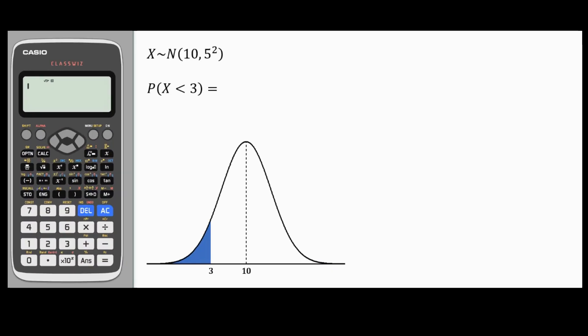Finding probabilities with the normal distribution is like finding the area under the curve between two limits. To do so, you'll have to go to menu, then go to distribution, which is option number seven, and then select the normal CND, which is option number two.